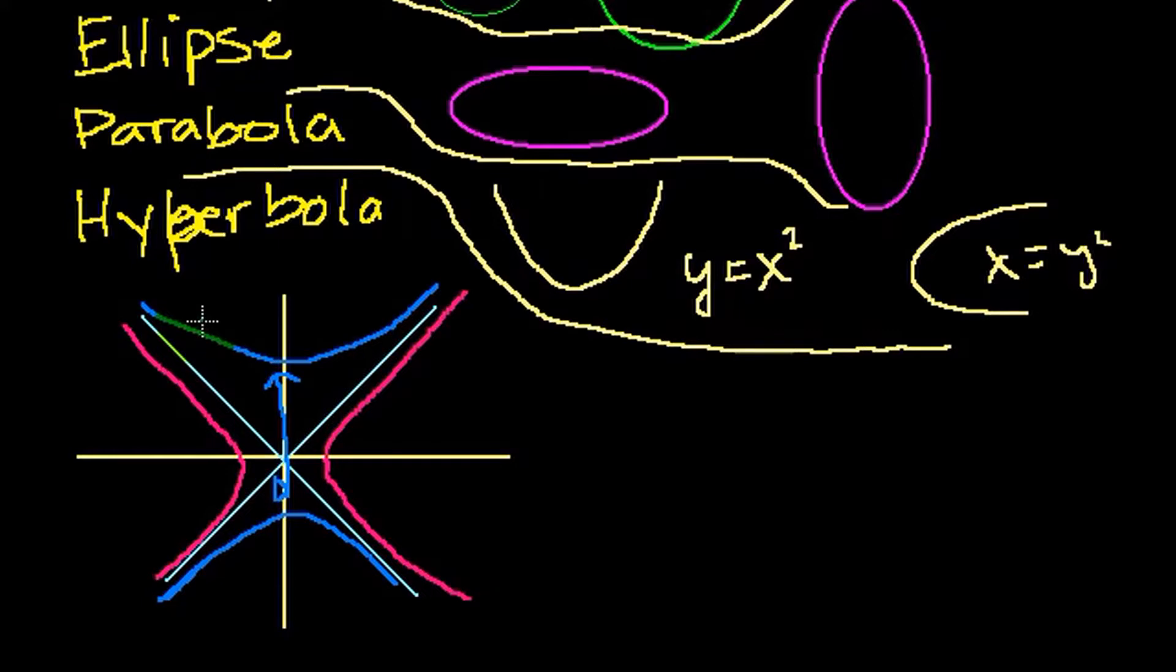So those are the different graphs. So the one thing that you, I'm sure you're asking is, why are they called conic sections? Why aren't they called bolas, or variations of circles, or whatever?